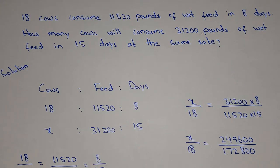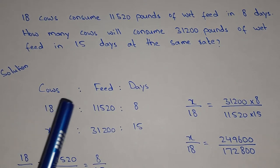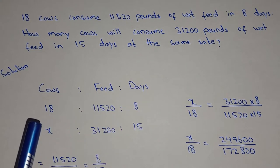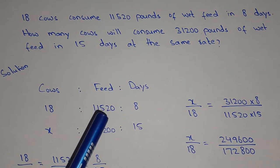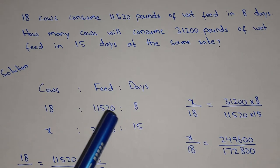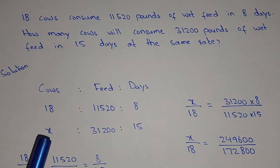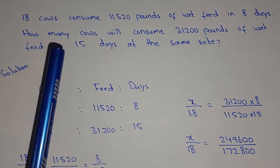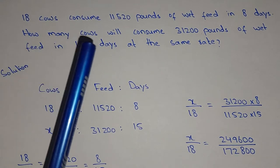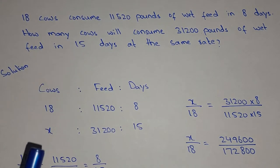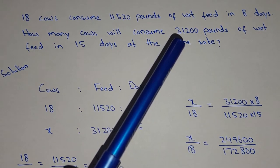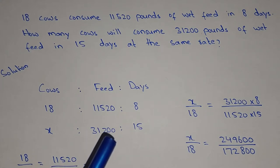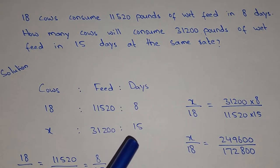In this problem, we are given three things: cows, the weight feed, and days. So 18 cows consume 11,520 pounds of weight feed in 8 days. In the next line, it is asking how many cows — the number of cows is not given, we have to find out. So we will put X. How many cows will consume 31,200 pounds of weight feed in 15 days? So the number of days will be 15.